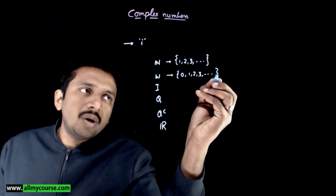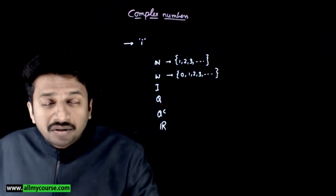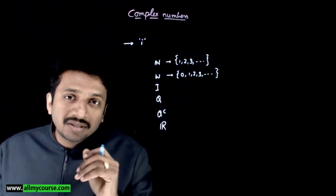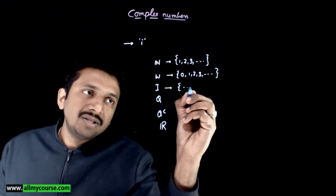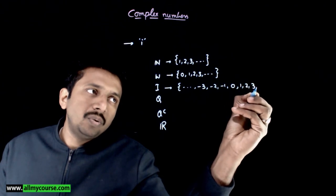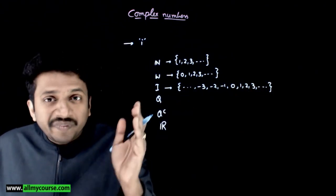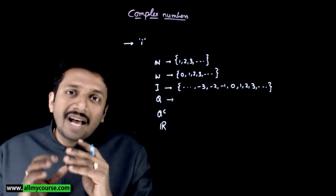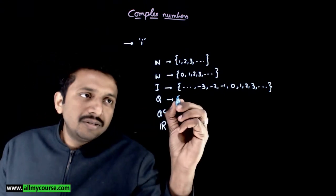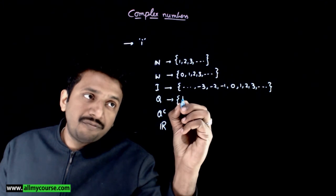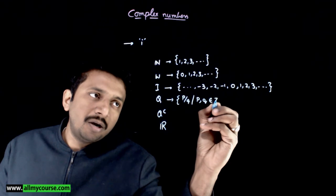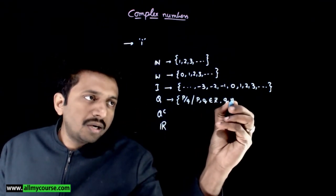Whole numbers are 0, 1, 2, 3, and so on. If you add negative numbers to the set of whole numbers, you get the set of integers: ...-3, -2, -1, 0, 1, 2, 3, and so on. Rational numbers are numbers which can be expressed as a ratio P/Q, where P and Q both belong to integers and Q is not equal to 0.